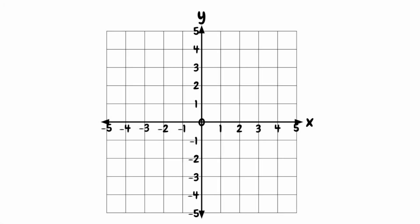In this video we're going to take a very quick look at how we find and plot coordinates on a grid. Coordinates are used to describe the position of specific points on a grid. On our grid we have a horizontal axis, which we call the x-axis, and we also have a vertical axis, which we call the y-axis.